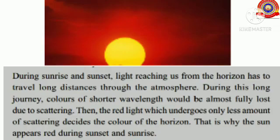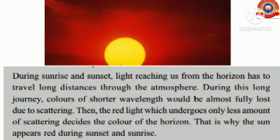Let's see in detail why the Sun appears red during sunset and sunrise. During sunrise and sunset, light reaching us from the horizon has to travel long distances through the atmosphere. During this long journey, colors of shorter wavelength are almost fully lost due to scattering. Then the red light, which undergoes only less amount of scattering, decides the color of the horizon. That is why the Sun appears red during sunset and sunrise.